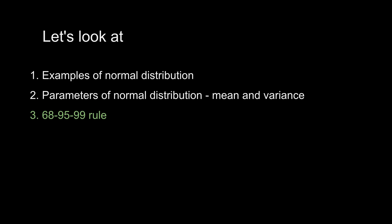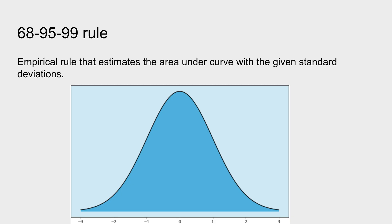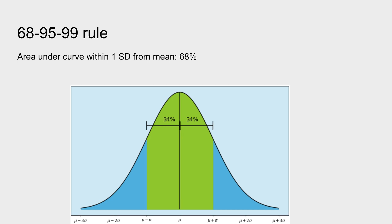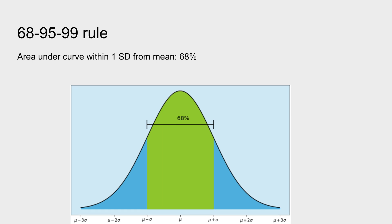Based on mean and standard deviation, we understand the 68-95-99 rule. This is an empirical rule that estimates the area under the curve given standard deviations. One thing to note first: the area under the curve of a distribution sums up to 1. Around the mean, if I go one standard deviation left or right, the area represented by the green region is 68% — that is, 0.68 of the whole area is captured within one standard deviation of the mean. This can also be split exactly into half: 34% on each side.